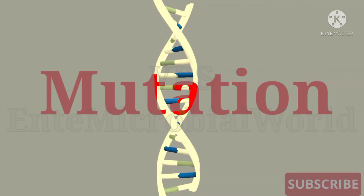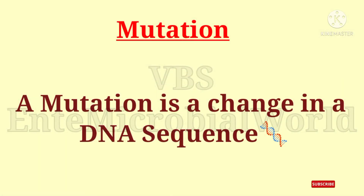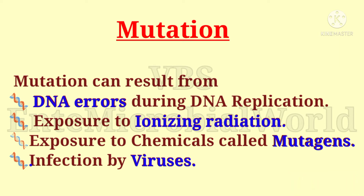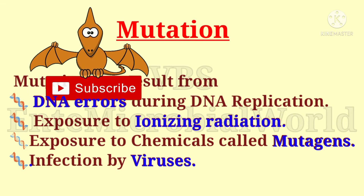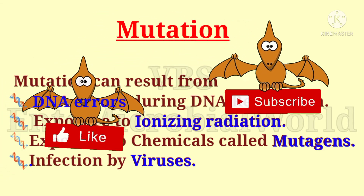Next, we are going to see what is a mutation. A mutation is a change in a DNA sequence. Mutation can result from DNA errors during DNA replication, exposure to ionizing radiation, exposure to chemicals called mutagens, or infection by viruses.